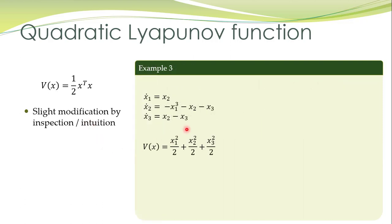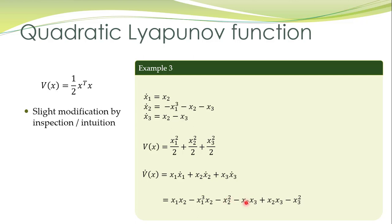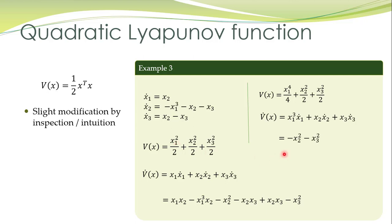Here is one more example with a quadratic candidate Lyapunov function. We take the derivative along system trajectories and get an expression where some terms cancel out. We want to get rid of the remaining indefinite term, which we can do through a similar modification. The resulting V̇ is negative semi-definite — the x1² term is missing — and we conclude that the equilibrium point is stable.